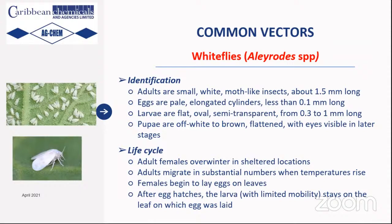The most important factor about whiteflies is viral transmission. As sucking insects, the virus lingers on their external surface and is transmitted when they pierce plant foliage. In hot conditions when plant water demand is high and whitefly populations increase, there is a compound effect — crops like tomato show severe stunting and curling when viral transmission has occurred.